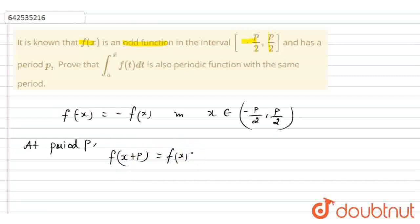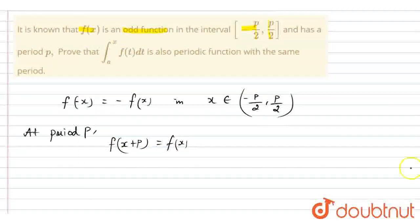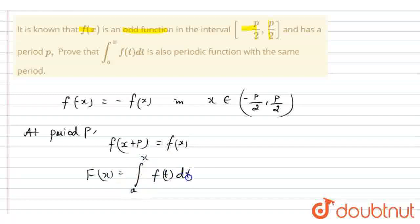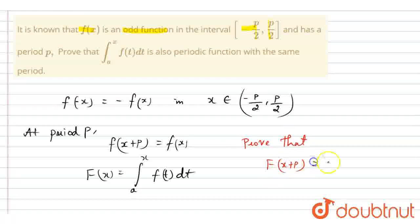Therefore, I am going to write the given F of x function in capital form. So, capital F of x is equal to integral with limit a to x of f of t dt. Now, we need to prove that capital F of x plus p is equal to capital F of x.